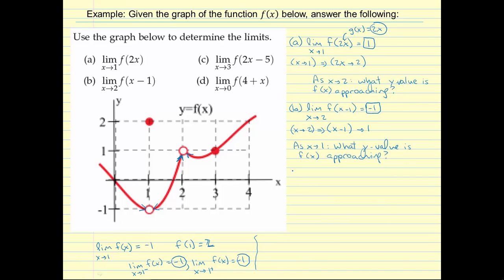For part c, it's a similar kind of thing. The limit as x approaches 3 of f of 2x minus 5. So as x approaches 3, that means 2x minus 5, just plugging in 3, 2x minus 5 approaches 1.